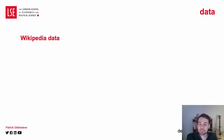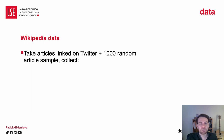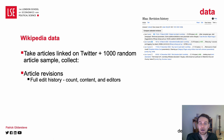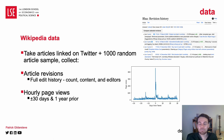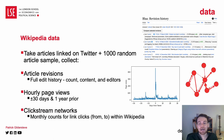In terms of Wikipedia data, I take the articles linked on Twitter, and a further 1,000 article random sample not from Twitter, and collect article revision history, hourly page views, and clickstream networks of what articles link to each other and how often people use the links.